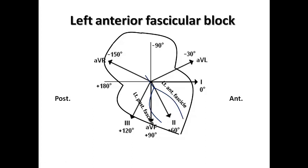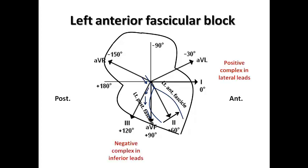Imagine we have a problem in just one branch of the left bundle branch — the left anterior fascicle. The electrical impulse will travel down through the posterior fascicle, then in order to depolarize the anterior portion of the interventricular system it must travel from posterior to anterior direction. We would therefore expect a predominantly positive complex in lateral leads and predominantly negative complex in inferior leads.